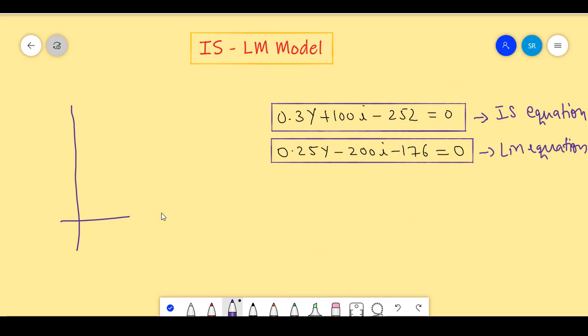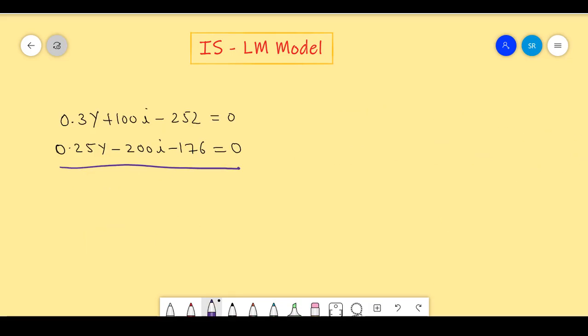The equilibrium output and equilibrium interest rate exist where the IS curve and the LM curve intersect each other. Therefore, we can equate the equation of the IS curve with the equation of the LM curve. Solving for both of them simultaneously, we can write them this way.